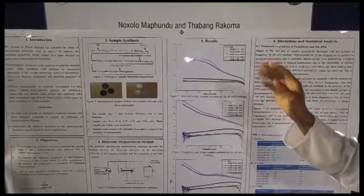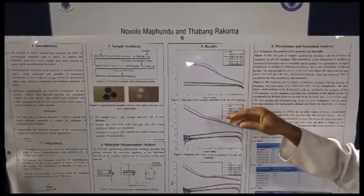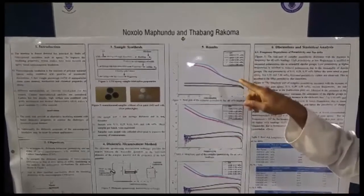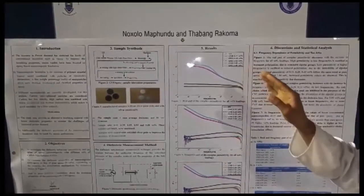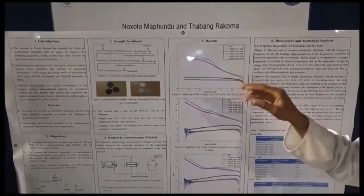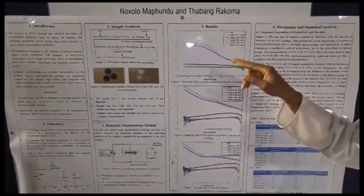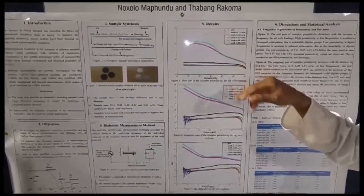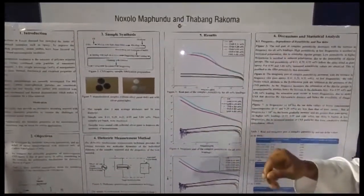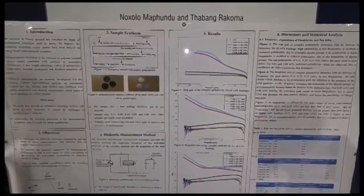With higher concentrated carbon nanoparticles, greater than 0.53 weight percentage, the real permittivity is drastically increased, and the losses also increase drastically.